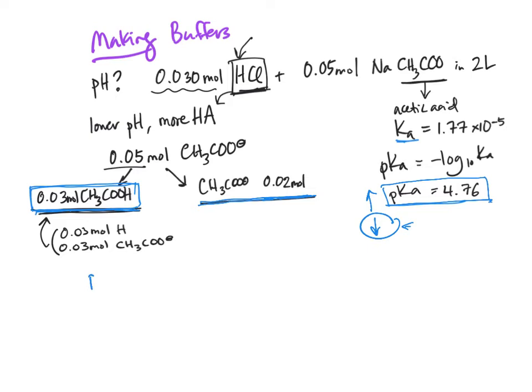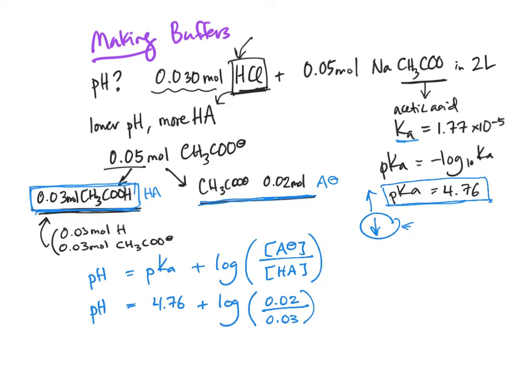So the pH is equal to the pKa plus the log of the conjugate base over the acid. So what is our pH? Knowing that our pKa is 4.76 and we've got the log of 0.02 over 0.03. Using a calculator to do this math, the log of 0.02 over 0.03 is negative 0.176.